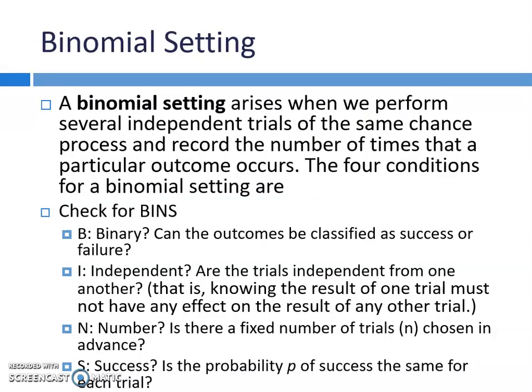A binomial setting arises when we perform several independent trials of the same chance process and record the number of times that a particular outcome occurs. There are four conditions that must be true in order for it to be considered a binomial setting. We're going to use the acronym BINS — B-I-N-S — to help us remember them. B: Is it binary? Meaning, can the outcomes be classified as either a success or a failure?